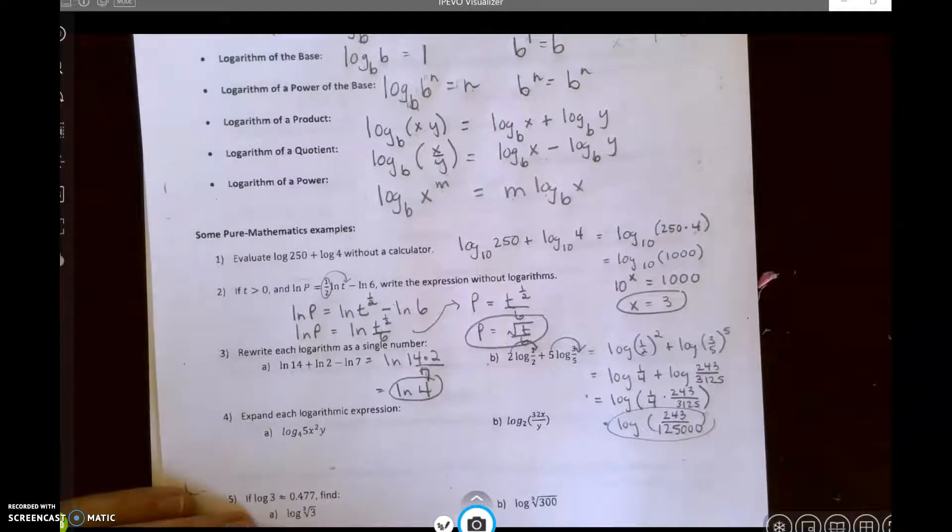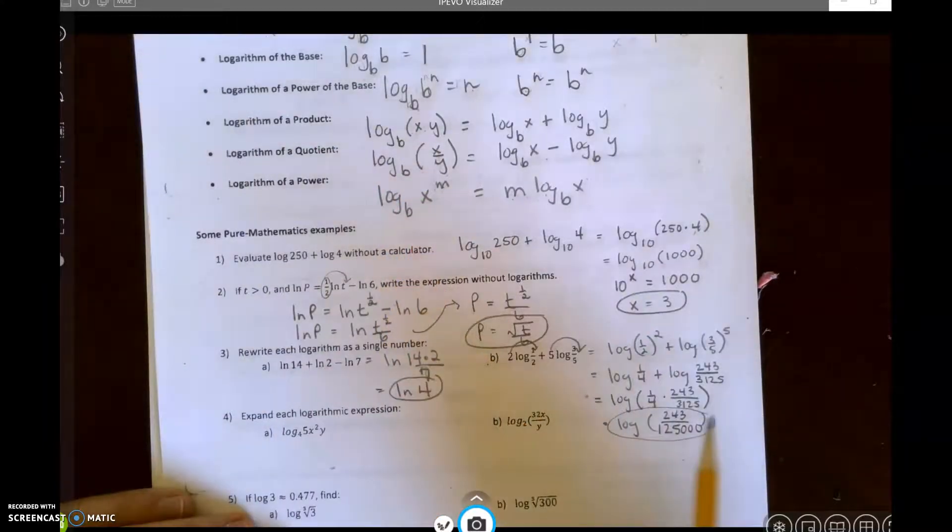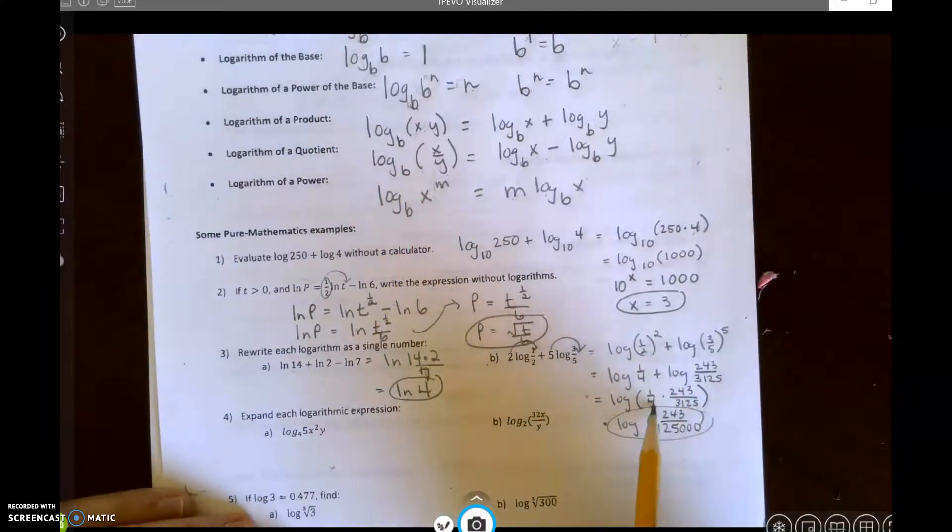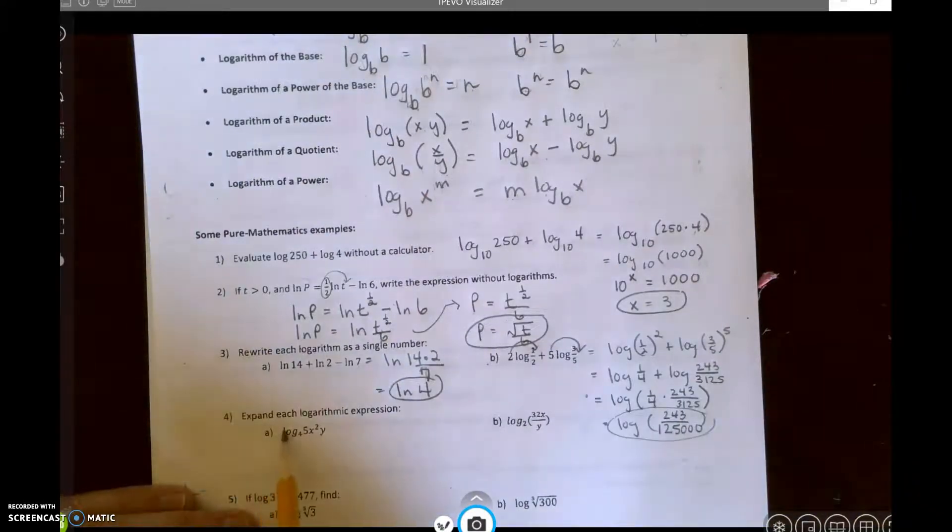Okay, so since it gave me a decimal, we would rather look like these. So that's why I just went ahead and got 243 over 12,500. I'm not sure why the calculator wouldn't reduce it or give me that fraction.